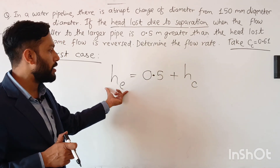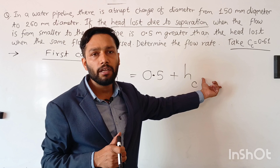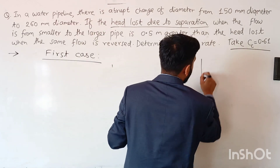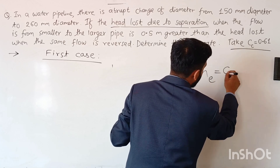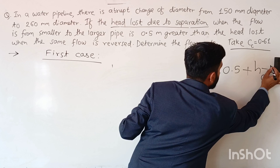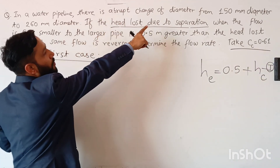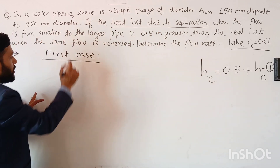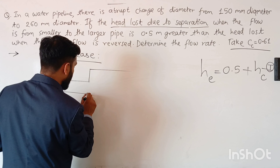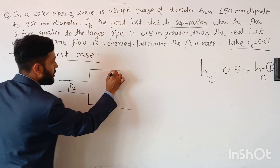You must apply the formula of head loss due to sudden enlargement and head loss due to sudden contraction, and substitute into this equation. I am going to write this as equation number 1: head loss due to sudden enlargement is equal to 0.5 meter greater than head loss due to sudden contraction. In the first case there is an abrupt change of diameter from 150 mm to 260 mm, that means there is sudden expansion.